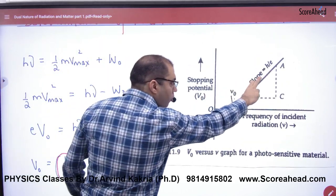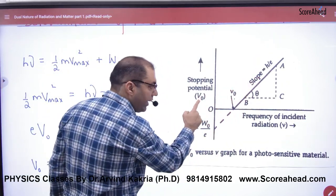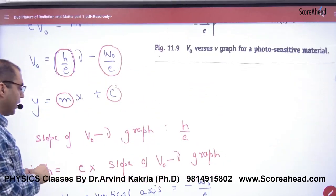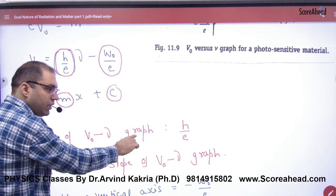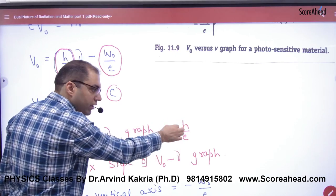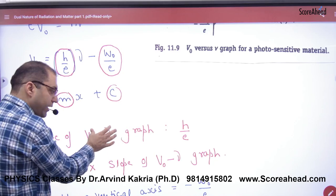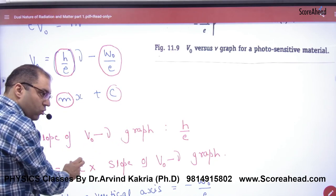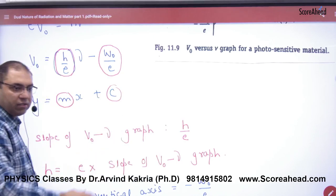What is the slope? The slope of V₀ versus frequency curve equals h by E. So multiplying, E times electron charge times the slope of V₀ versus frequency graph.